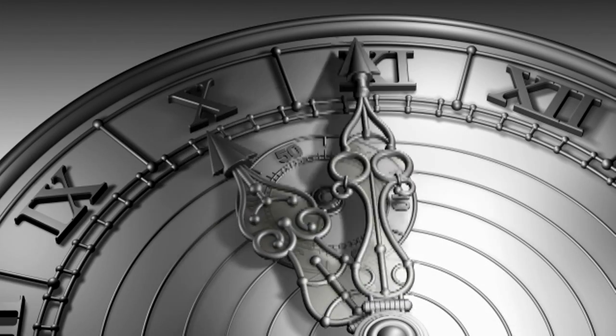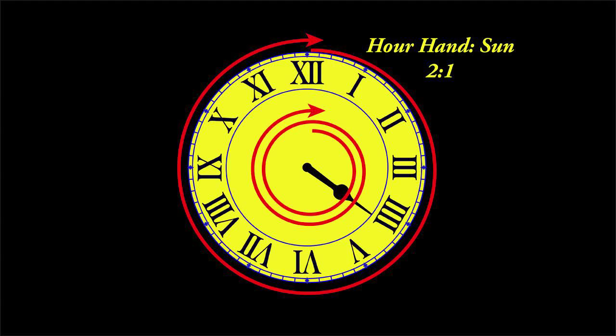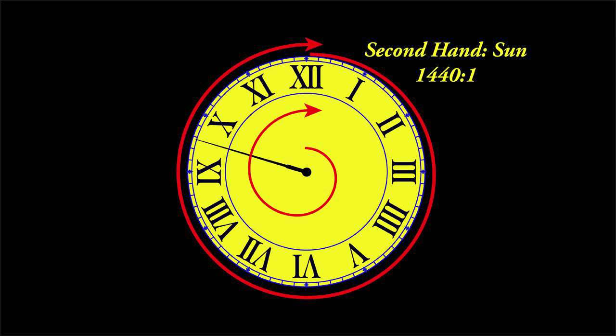A traditional timepiece has a dial face and three hands: the hour hand, the minute hand, and the second hand. As the sun appears across the sky once, the hour hand goes around the dial face two times — so if the sun's motion is called time, the hour hand's motion is twice as fast as time. The minute hand goes around 24 times — 24 times as fast as time. The second hand goes around 1,440 times — 1,440 times as fast as time.